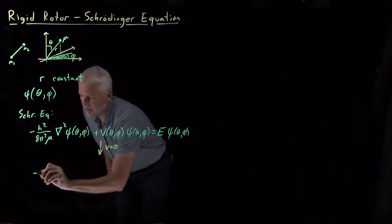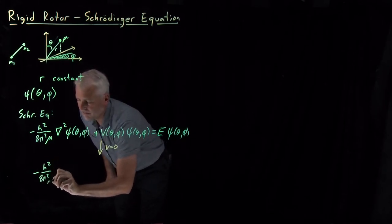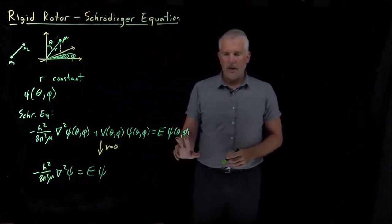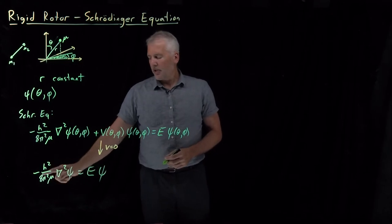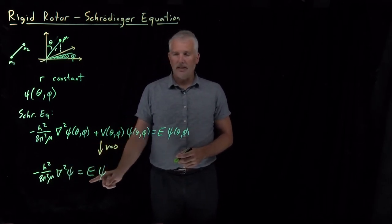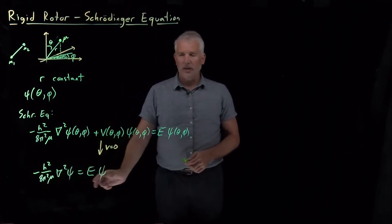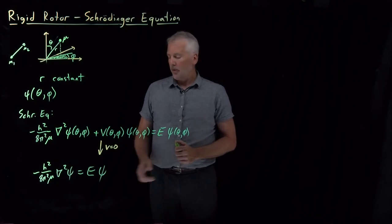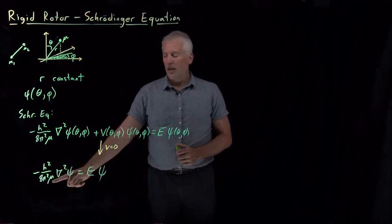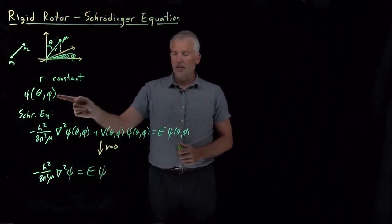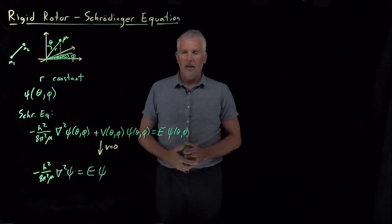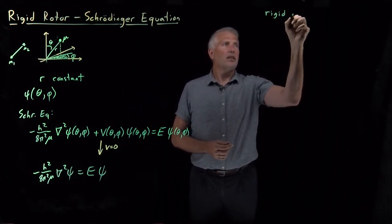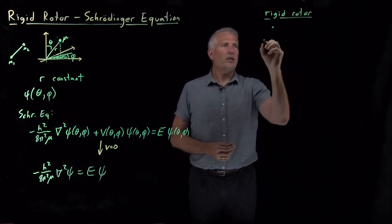With that assumption, Schrödinger's equation simplifies considerably. The kinetic energy term — minus h squared over 8 pi squared mu times del squared — acting on psi equals E times psi. This looks very similar to what we had for the 3D particle-in-a-box problem; the main difference is that we have mu for mass, and crucially, we need to solve this in spherical polar coordinates theta and phi, rather than Cartesian coordinates x, y, and z.